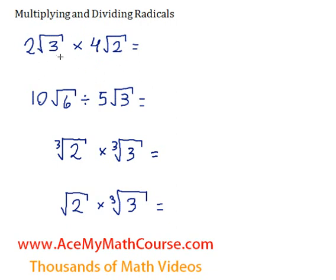Our first step will be to just multiply the numbers outside of the square root. So 2 times 4 is just 8. Then we can multiply the numbers inside the square root — square root of 3 times square root of 2, and 3 times 2 is just 6. So we get 8 times the square root of 6, and that's as far as we can simplify it.